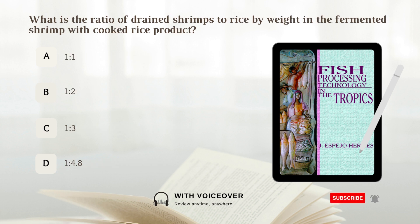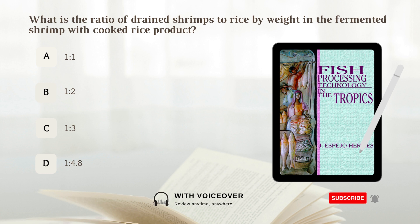What is the ratio of drained shrimps to rice by weight in the fermented shrimp with cooked rice product? A) 1:3. B) 1:4.8.